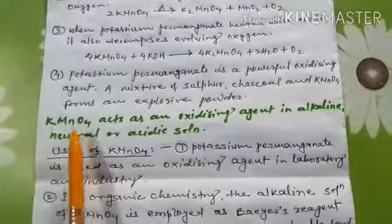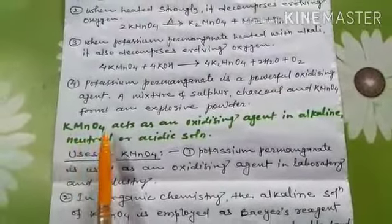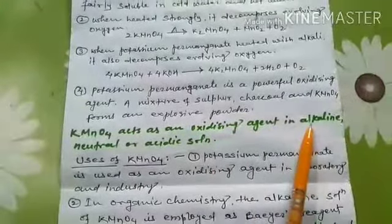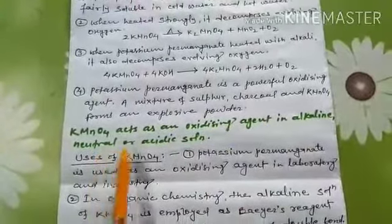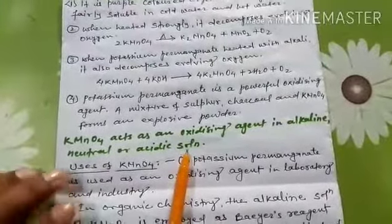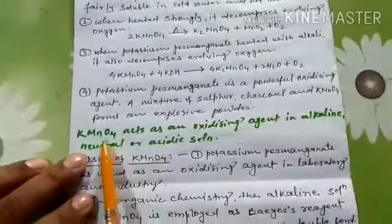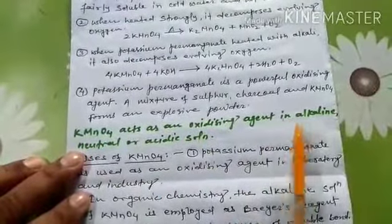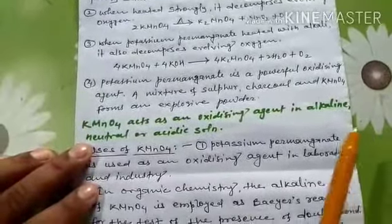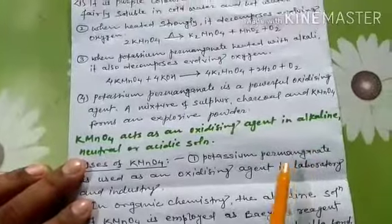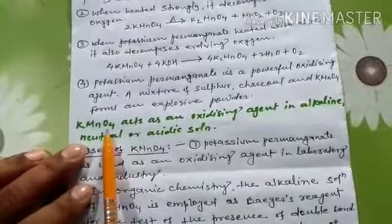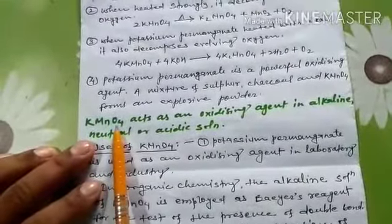Potassium permanganate, KMnO₄, acts as an oxidizing agent in alkaline, neutral, or acidic solution. In all types of solutions — alkaline, neutral, and acidic — potassium permanganate acts as an oxidizing agent.